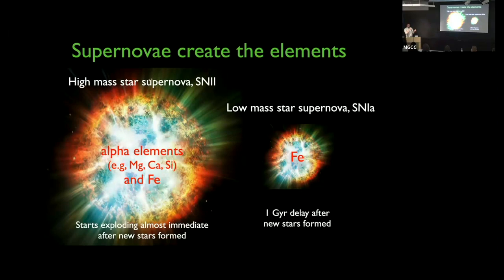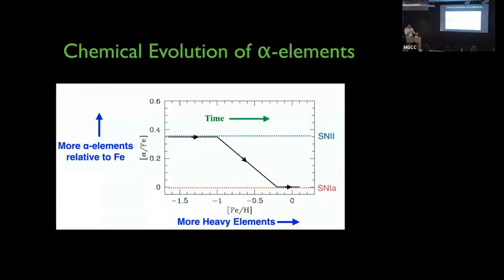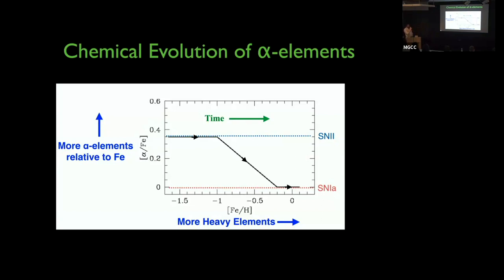Type Ia supernovae, which mostly give off iron, take about a billion years to form. They're a binary system where one component is a white dwarf, and it takes about a billion years for intermediate-mass stars to evolve into a white dwarf. So once you start a star formation event, it takes about a billion years for Type Ia's to kick in. In the abundance plane — alpha abundances relative to iron on the y-axis versus overall metallicity on the x-axis — over time we're moving to the right.